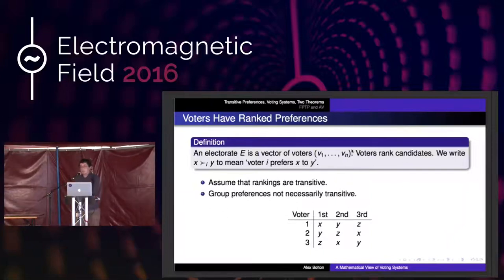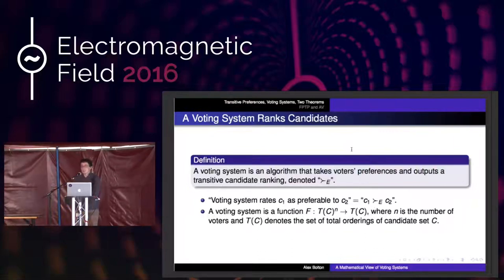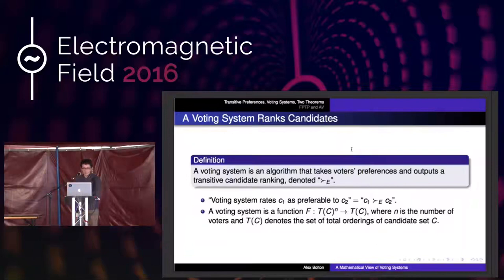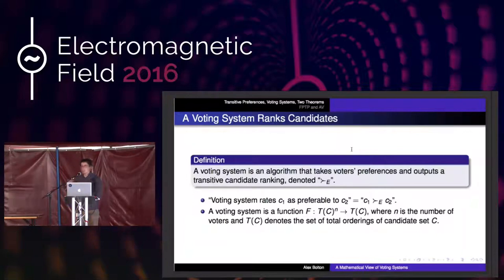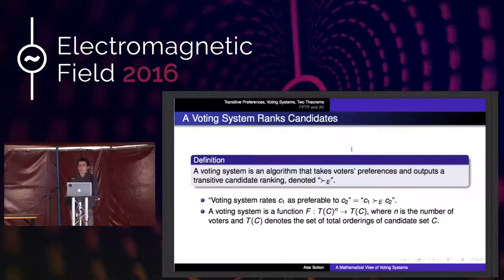A voting system is just defined as an algorithm. It takes in a set of n voters, takes in their preferences, does some computation, and outputs a ranking of the candidates. Formally, if you have a set of n possible rankings of candidates, the algorithm is a function that outputs just a single ranking. For example, first-past-the-post is the simplest: any preferences except first preferences are ignored. Voters are only allowed to give their first preference, and whichever is most popular wins straight away.